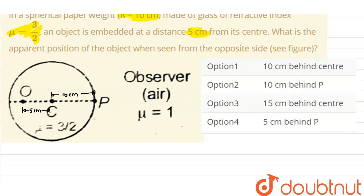Now we can use the formula of refraction through the spherical surface. So it will be equal to μ₂ upon V minus μ₁ upon U, that will be equal to μ₂ minus μ₁ upon R.